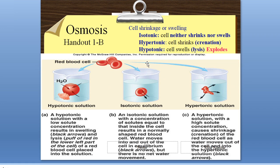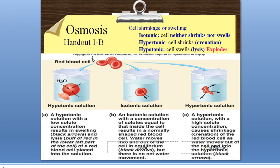A cell is not going to work very well if it is shriveled up and undergoes crenation — this causes cell dysfunction. The more dehydrated you get, the more water leaves the cell and the worse the cell functions, moving us out of homeostasis. We have to add more water to our body so that the water concentration changes and water can flow back into the cell, making the cell normal again, back to being isotonic.